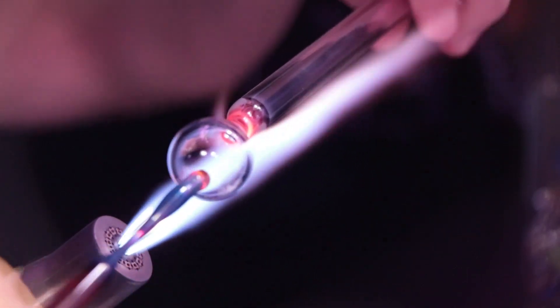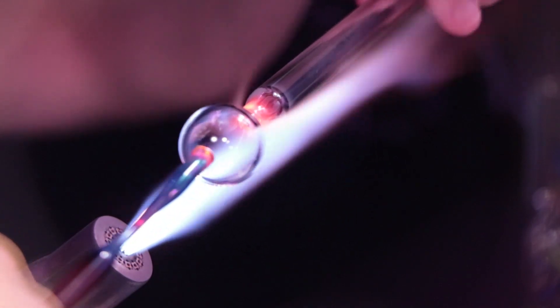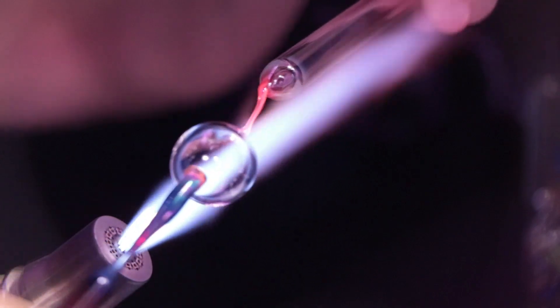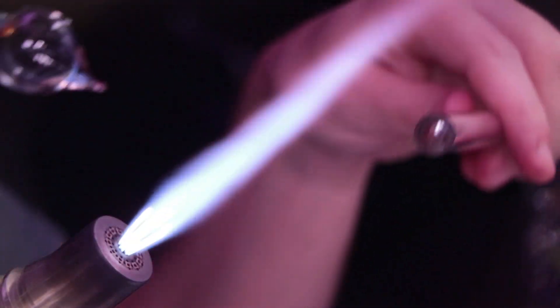And now I'm going to go ahead and melt off the blow tube from the bulb. I'm going very slow and carefully. I'm going for a teardrop shape just for aesthetics.